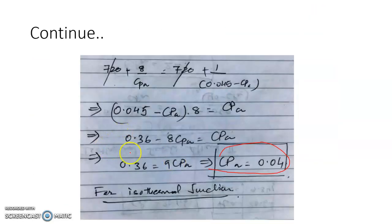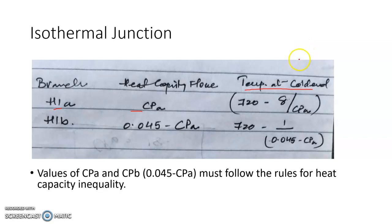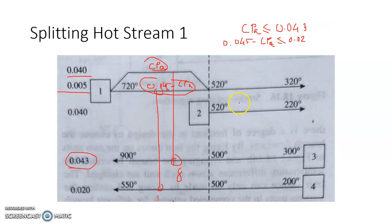If an isothermal junction is not possible, a valid CpA value that satisfies both Cp conditions can still be chosen; the mixed outlet will still reach 520°C but with different individual stream temperatures. We prefer the isothermal junction when achievable. We will meet in the next video with more examples.